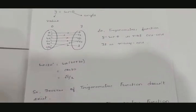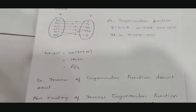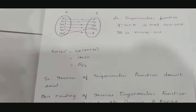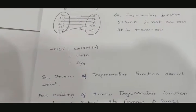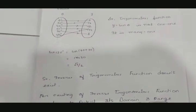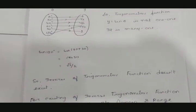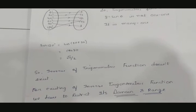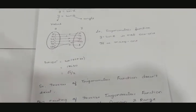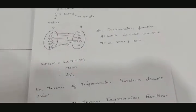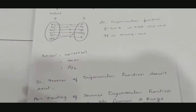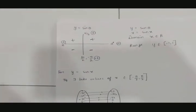The inverse trigonometric function can still be made to exist. To make it exist, we need to restrict the domain and range in a specific way — restrict them so that the function becomes both one-one and onto. So to make the inverse trigonometric function exist, we need to make it one-one and onto by restricting the domain.